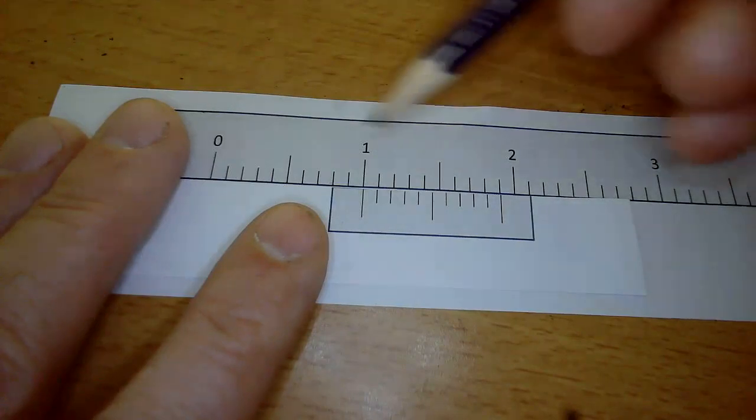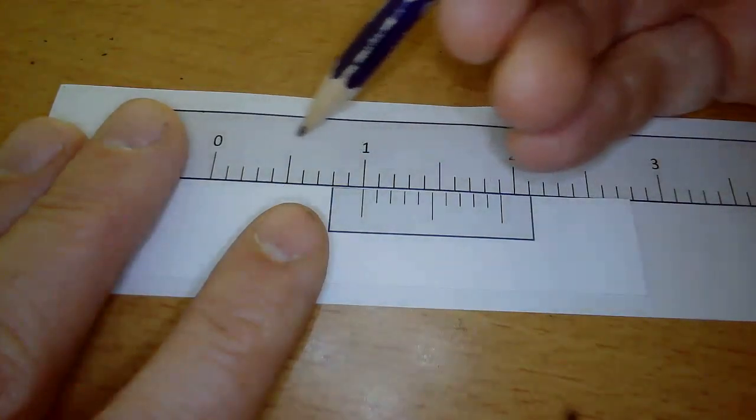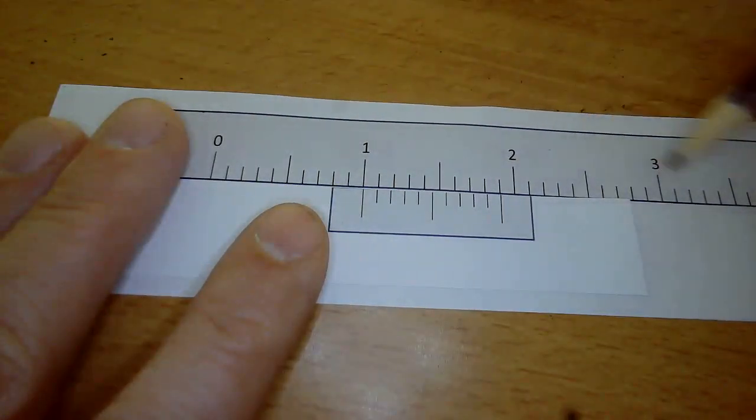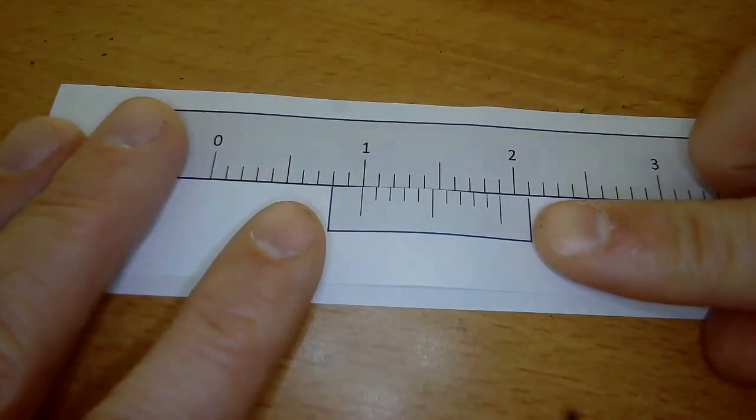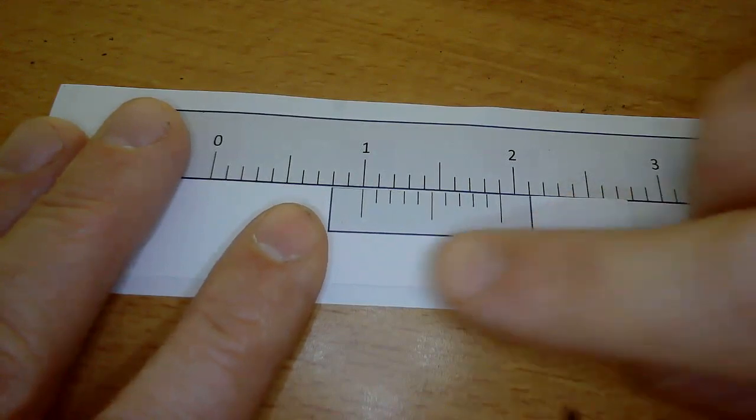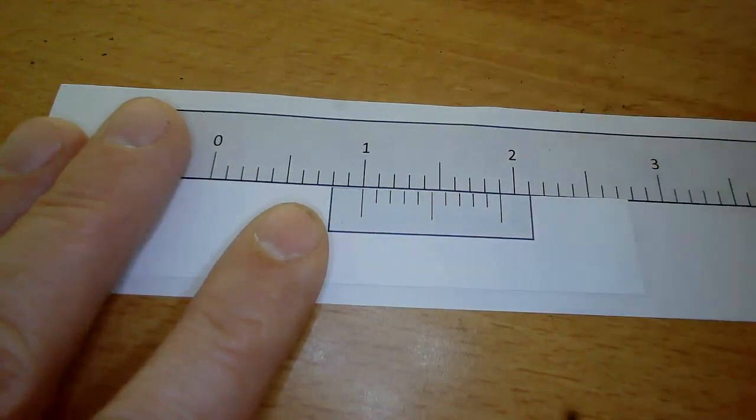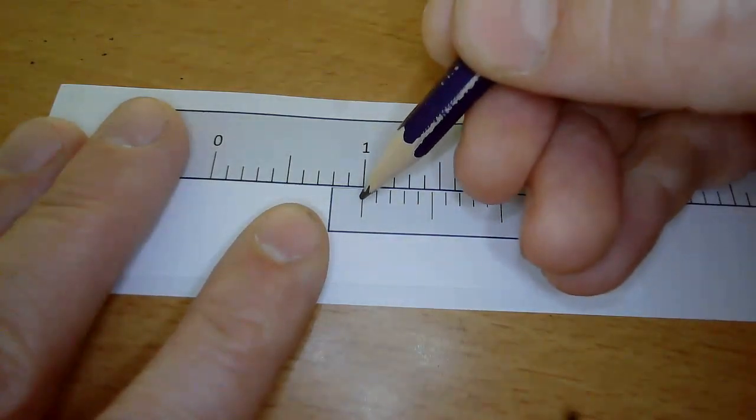I've enlarged the scale to show how this works. This is the main scale: 0 centimeters, 1 centimeter, 2 centimeters, and so on. The vernier scale has 10 marks along 9 millimeters on the main scale. We look for where this mark lines up on the scale.